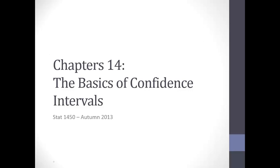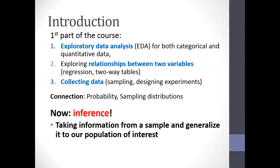Chapter 14 is titled 'The Basics of Confidence Intervals.' The notes are posted in the same place as the Chapter 11 notes — under supplemental materials, under the semi-complete notes. We started out with exploring data and relationships, and now we're into the section called Inference, where we take information from our sample and generalize it to our population of interest. We're going to use the sample mean to estimate the population mean — that's our overall goal, and now we'll look at how we actually go about doing this.